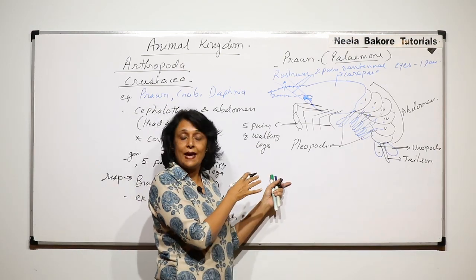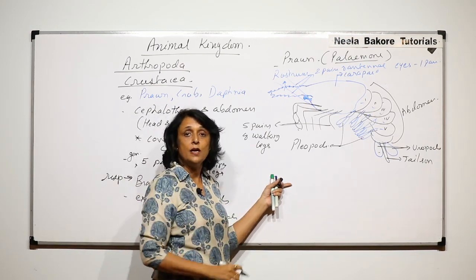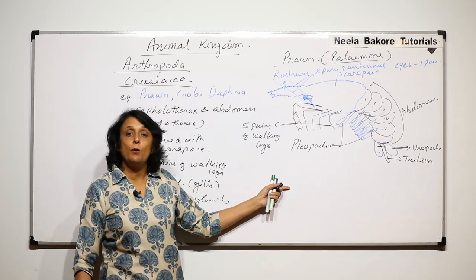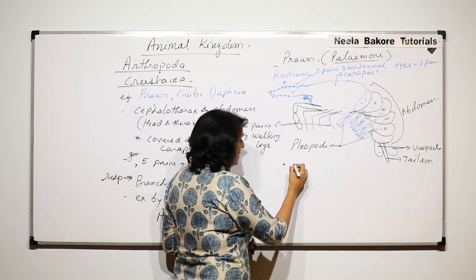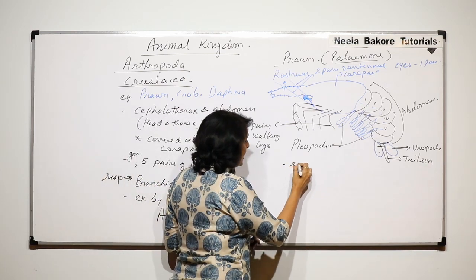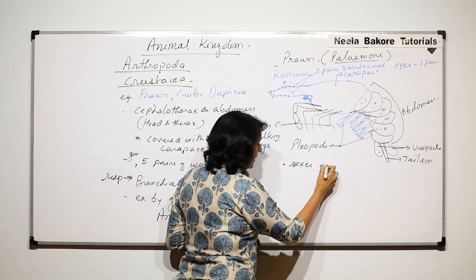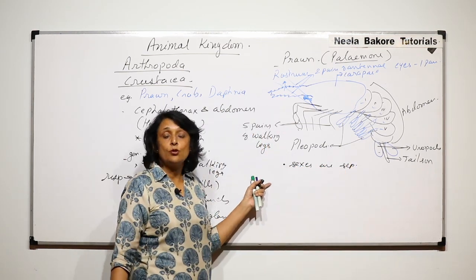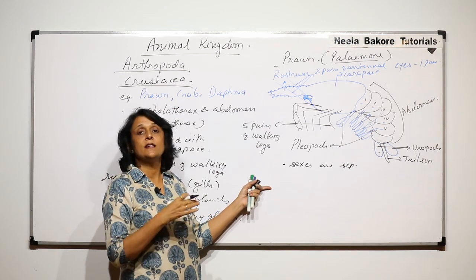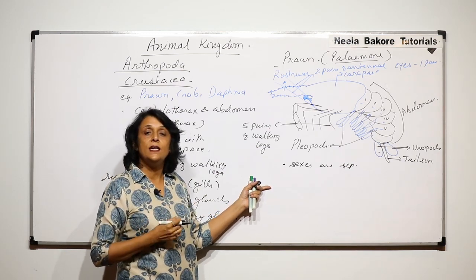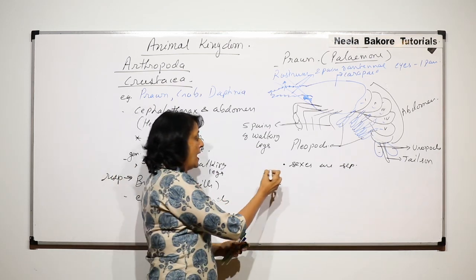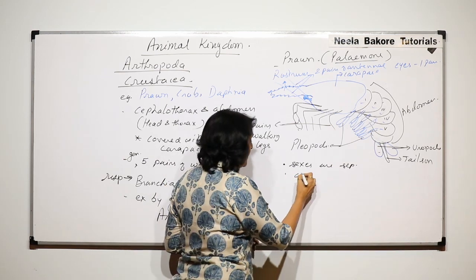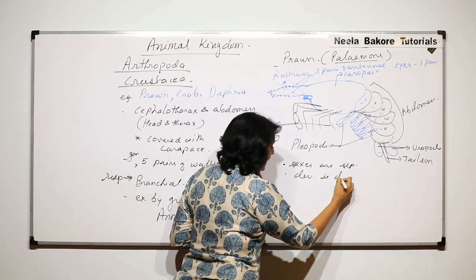Prawns have green glands for excretion, and respiration is branchial — with the help of gills. The sexes are separate, meaning there is sexual dimorphism and males and females can be easily identified. After fertilization, development is direct, meaning there is no larval stage.